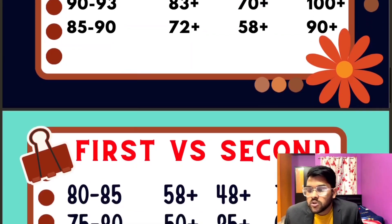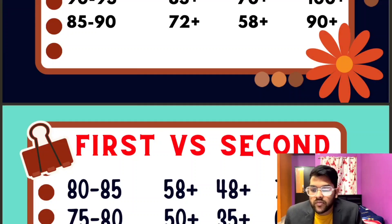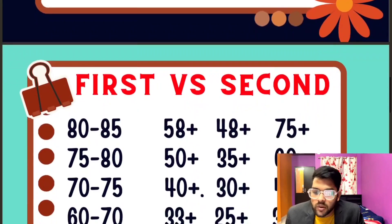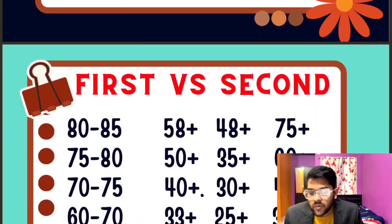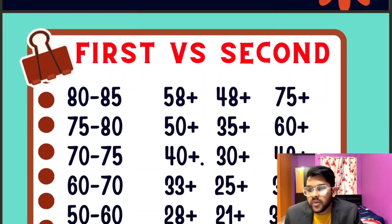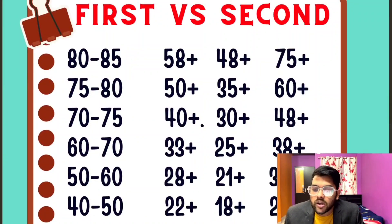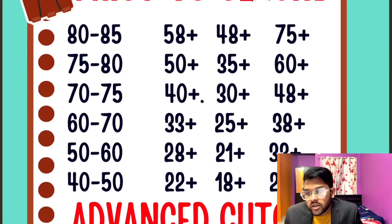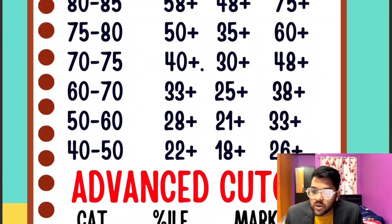For 80 to 85 percentile, 75+ marks are required. For 75 to 80 percentile, 60+ marks. For 70 to 75 percentile, 48+ marks. For 60 to 70 percentile, 38+ marks. For 50 to 60 percentile, 33+ marks. For 40 to 50 percentile, 26+ marks. These are for easy paper — for moderate and hard, check the first and second columns shown on screen.